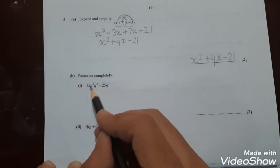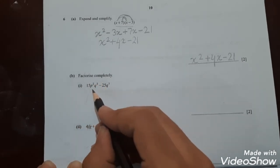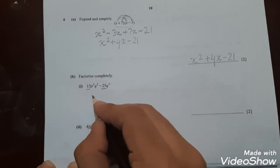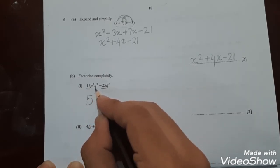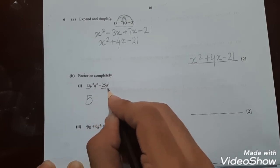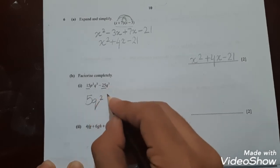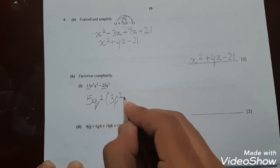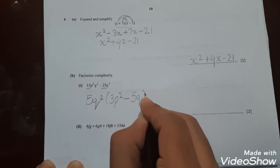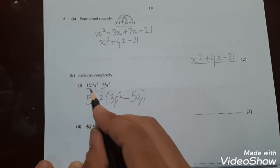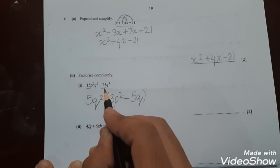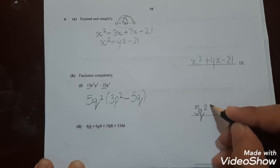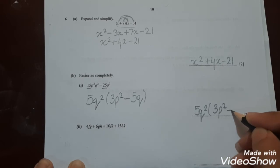Question 6 part B part 1 states: factorize completely 15p²q² minus 25q³. Since 15 and 25 are both multiples of 5, we extract 5. Since q² is common in both terms, we also extract q². So the factorization is 5q²(3p² minus 5q).